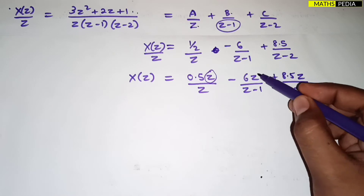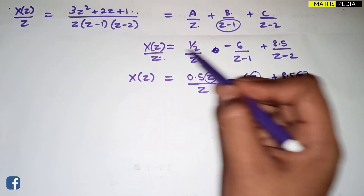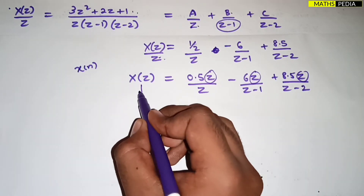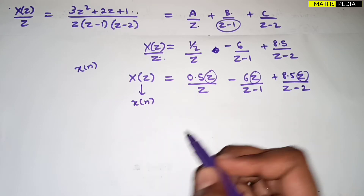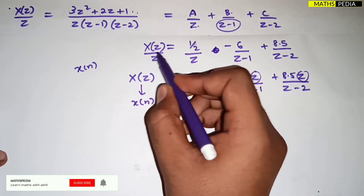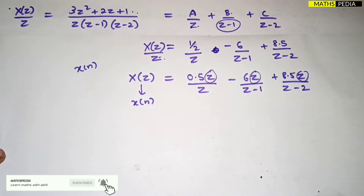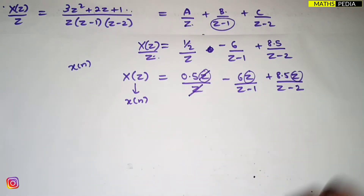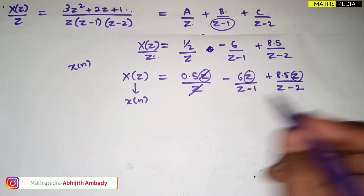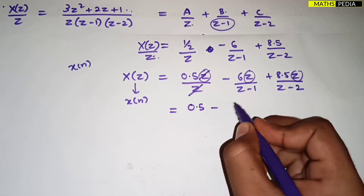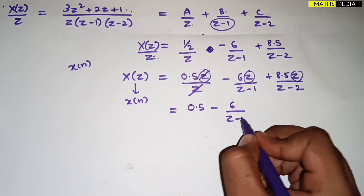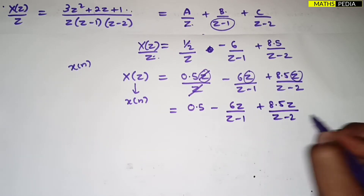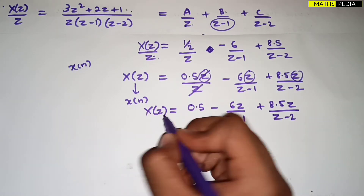After substituting A, B, C values, the next step is to multiply by z — bring z back to the numerator. This gives X(z) = 0.5·z/z − 6·z/(z − 1) + 8.5·z/(z − 2). The reason we divide by z first and then multiply back is to get it into the standard form z/(z − a) so we can apply the inverse z-transform formula.